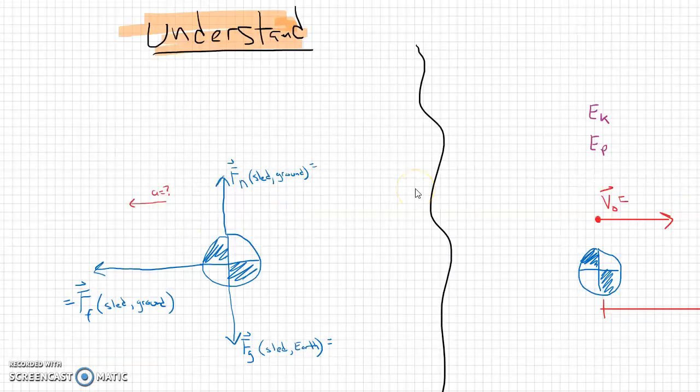To show some understanding, we're going to draw ourselves a picture here. This sled, we're going to represent with its center of mass, and it's going to have gravity pulling it down, that's by the Earth. It's going to have a normal force pushing it up, that's because of the ground. And the ground, the snow on the ground, is going to create friction, so that's going to pull it backwards. I'm making the assumption that it is moving to the right, so that means the friction is going to be to the left.